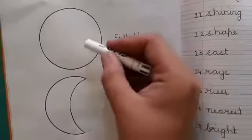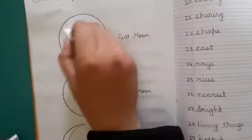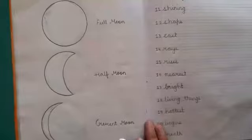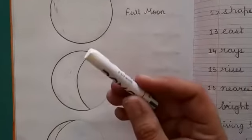Color the three shapes of moon with white color. You have to fill the three shapes of moon with white color.